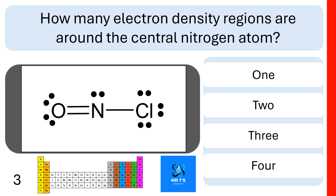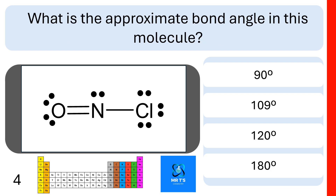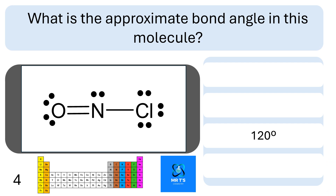Question 3. How many electron density regions are there around the central nitrogen atom? Are there 1, 2, 3, or 4? 3 is the correct answer here. Well done if you got that. Question 4. What is the approximate bond angle in this molecule? Is it 90 degrees, 109 degrees, 120 degrees, or 180 degrees? Well done if you put 120 degrees.